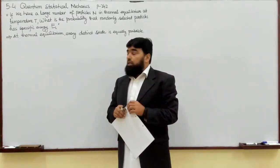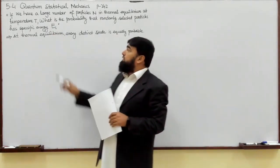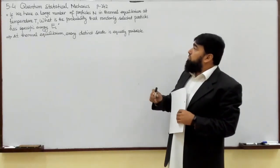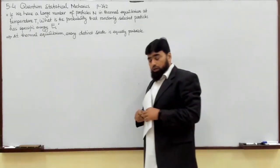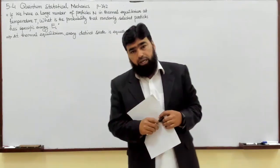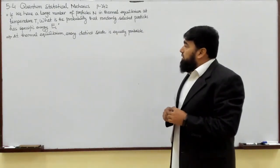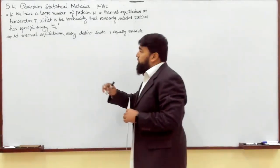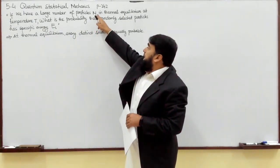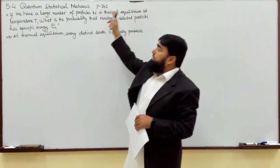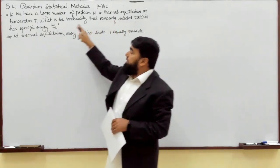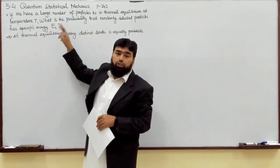Now we start the last topic of Chapter 5. We will begin Quantum Statistical Mechanics, found on page 242. In this section, we will use Quantum Statistical Mechanics to address a basic question: if we have a large number of particles M in thermal equilibrium at a given temperature T, what is the probability that a randomly selected particle has a specific energy E_i?